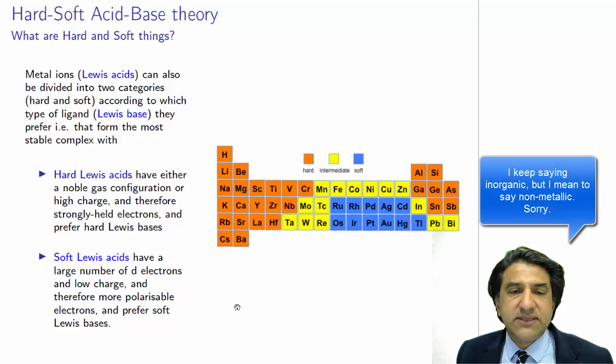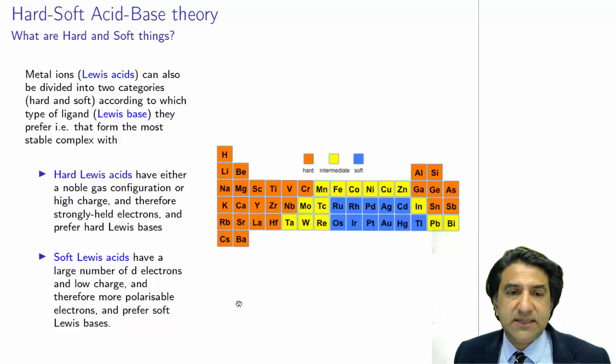Let's look at the metals, the Lewis acids, those are the electron pair acceptors. They can also be divided into hard and soft, and here's the periodic table showing that. So the little blue island here are the soft metals, and you can see that they're big and towards the end of the periodic table here. They've got a lot of d electrons, so gold, silver, cadmium, mercury, ruthenium, all of these guys from the second and third row are soft.